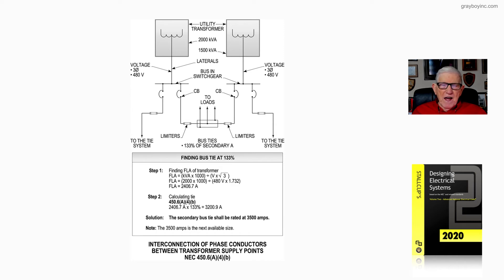So based upon this value in step two, the solution would be that we select the next size bus there. That would be 3,500 amps in rating from the catalog that we selected from. So in the solution then, the next available size above 3,200.9 amps would be 3,500, and that would be the size of the bus TIE that you see from those limiters that you see in the illustration. One and two.